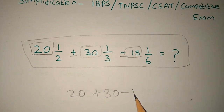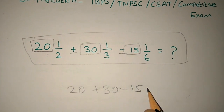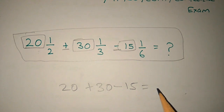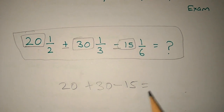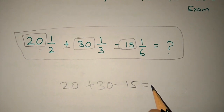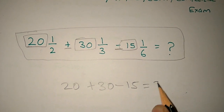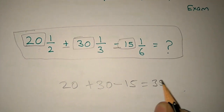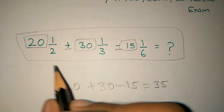We will add minus 15. So, if we solve this: 50 minus 15 equals 35. 35, we will add then.